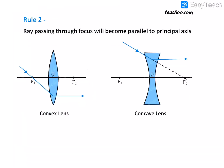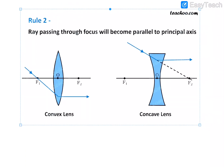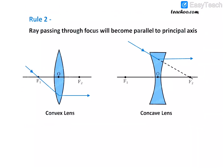Rule number two: the ray which is passing through the focus will become parallel to the principal axis. As you can see in both diagrams, a ray passing through the focus will become parallel to the principal axis after reflection.